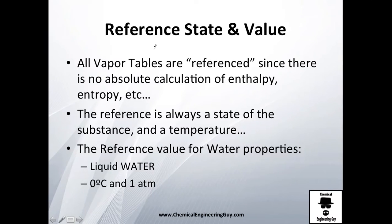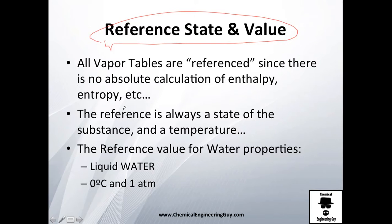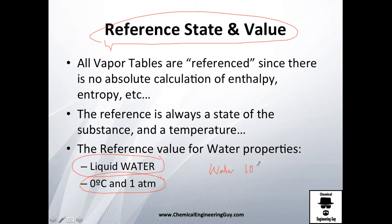Before advancing further on the data in thermodynamic tables, all these values are referenced to a state. The most common one, for example if you're looking for vapor tables, is liquid water at 0°C and 1 atmosphere. What that means is that if you wanted to get water at 10°C and 1 atmosphere, you reference it to this value, because calculating the total enthalpy, total entropy, and total internal energy is impossible — you need to calculate changes.